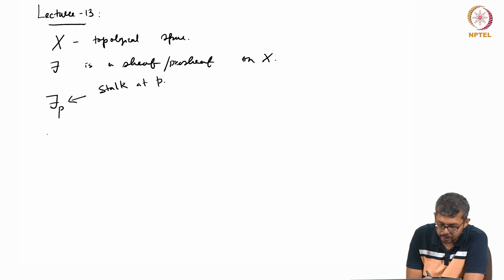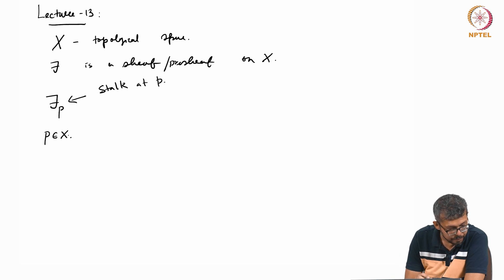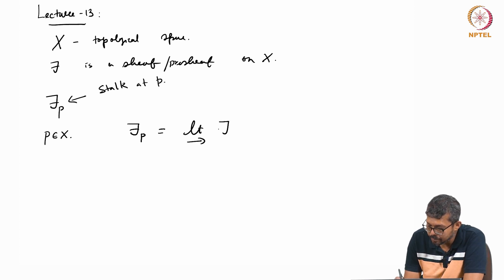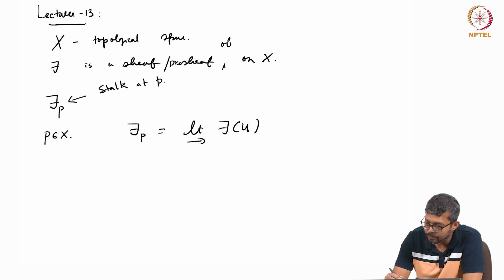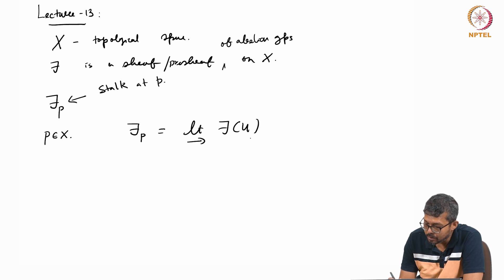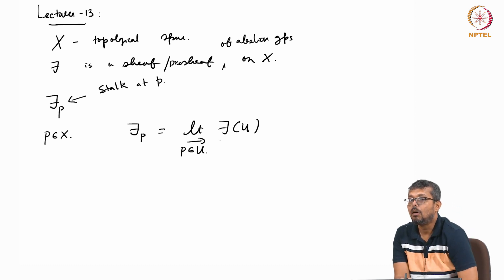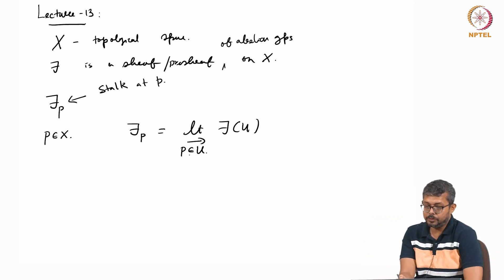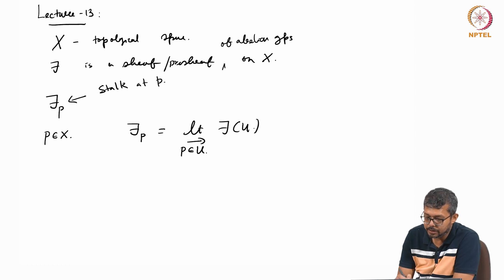p is a point in x. By definition, I will explain what this is. This is the direct limit of f(u). This is the sheaf of Abelian groups, so it should have some structure. Here p belongs to u. So what does this mean? Direct limit.